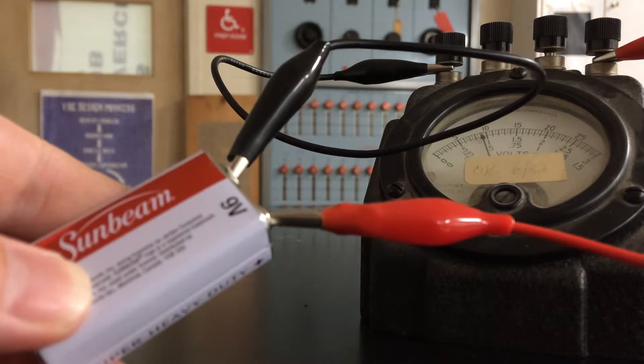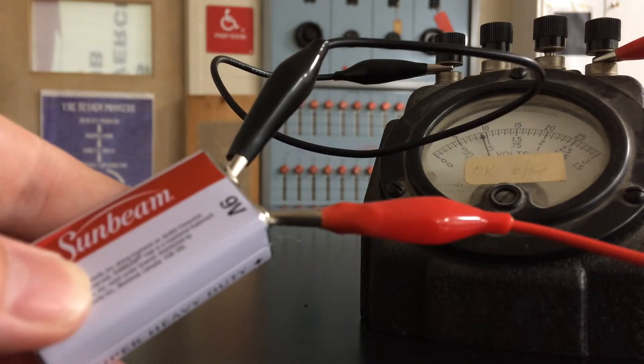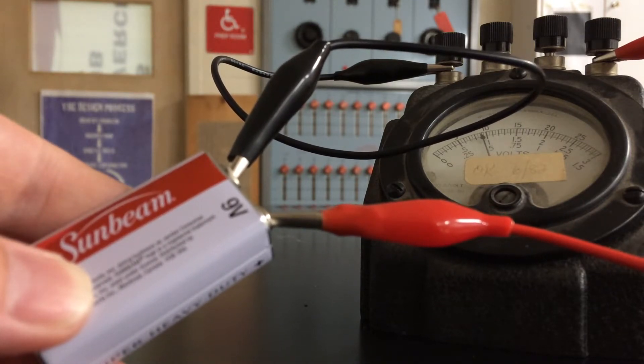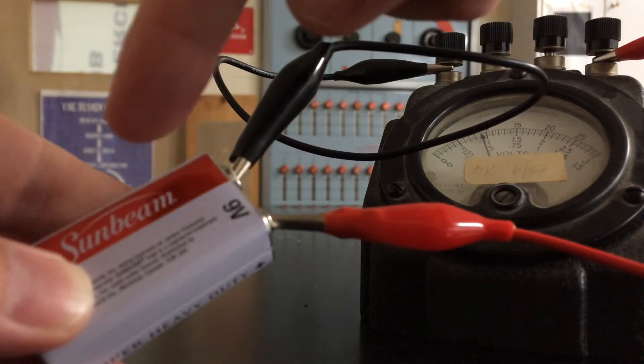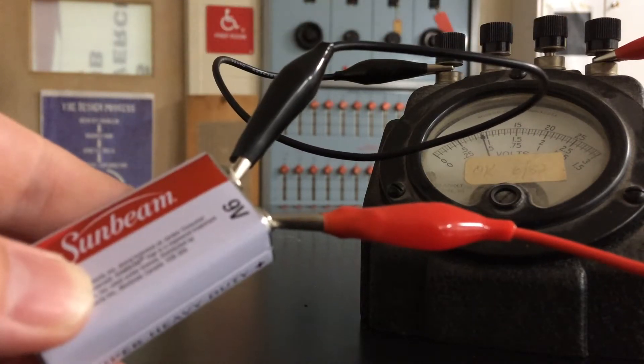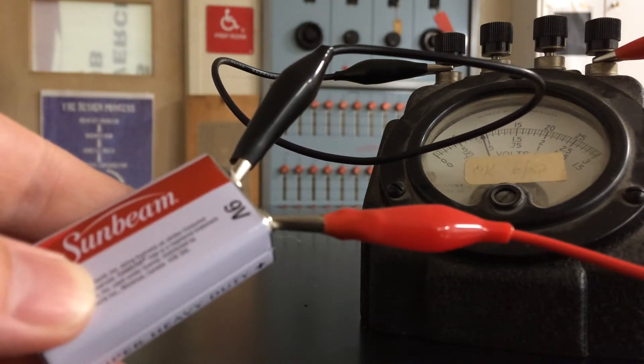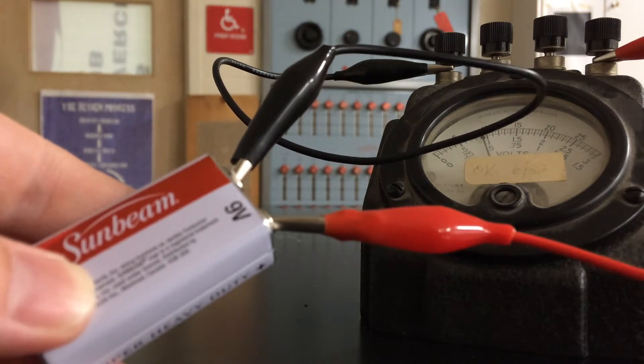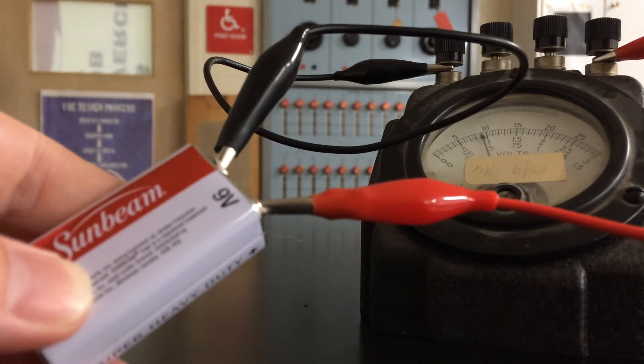Turns out the chemicals in this are exactly the same as the ones in the 1.5-volt cells I just showed you. The way you get a 9-volt battery from those chemicals is you stack six of them up inside this container. So there are actually six little mini batteries in there, stacked up just like the ones you just saw, and that's what's giving the 9 volts.